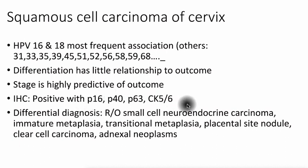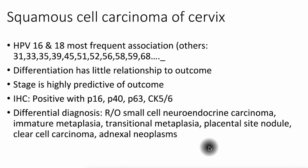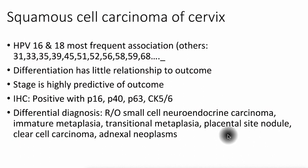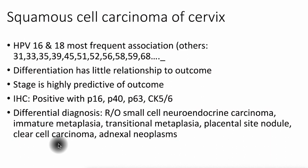Immunohistochemistry would be positive for squamous markers as expected, as well as P16 in virtually all cases. We want to make sure we're not dealing with a neuroendocrine carcinoma or some mixture of neuroendocrine and squamous carcinoma, so sometimes synaptophysin or other markers of neuroendocrine differentiation are helpful. Certain metaplasias — immature squamous metaplasia, transitional metaplasia, or even atrophy — can sometimes be mistaken for cervical dysplasia and invasion. The placental site nodule rarely has a cobblestone-type appearance that makes it look squamous, and some clear cell carcinomas may also have very sharp cell borders mimicking squamous tumors, though those are uncommon.